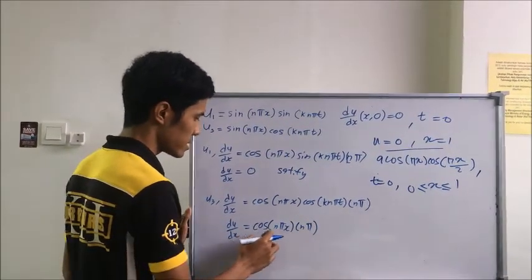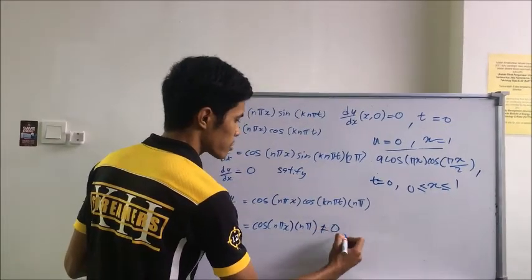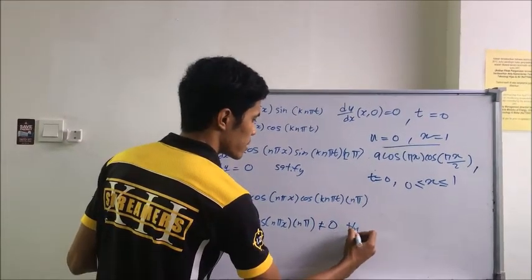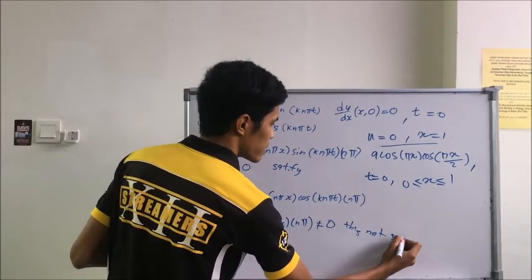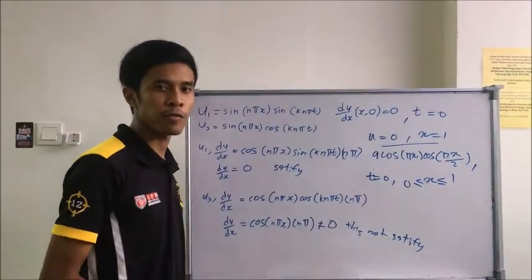So we get sine to cosine, and we substitute t equal to zero. And we get the answer is this. So this is not equal to zero. So this is not satisfied by this condition. So that's all from me. Thank you.